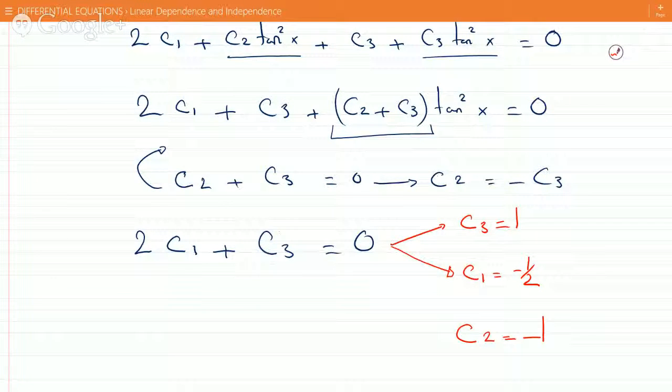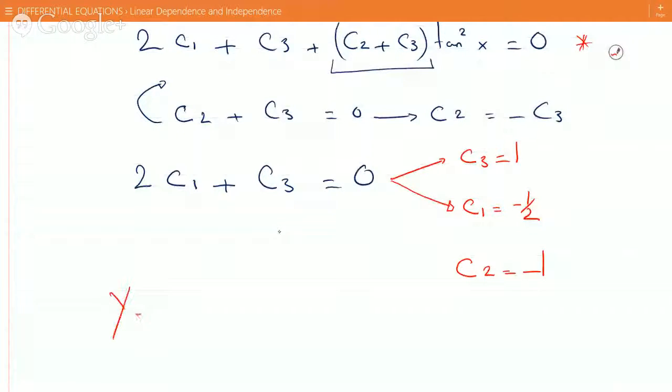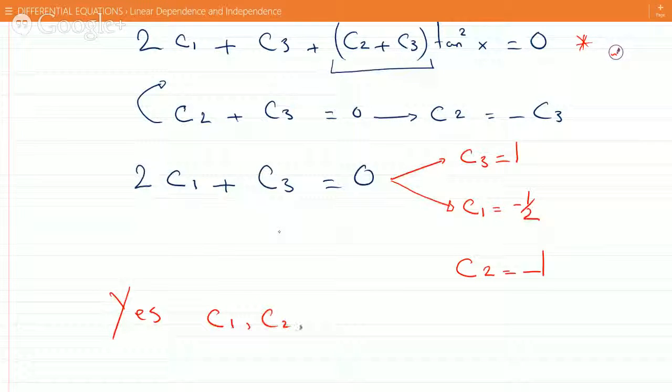So I found values for C1, C2, and C3 where this result goes to zero. If you plug this in here, you're going to get zero for sure because C2 plus C3 adds up to zero, so this goes away, and 2C1 will give you minus 1 plus C3 plus 1 will give you zero.